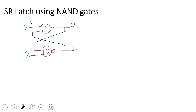The SR latch is nothing but 2 cross-coupled NAND gates. QN output is a feedback from Gate 2, and QN bar is an input from Gate 1.